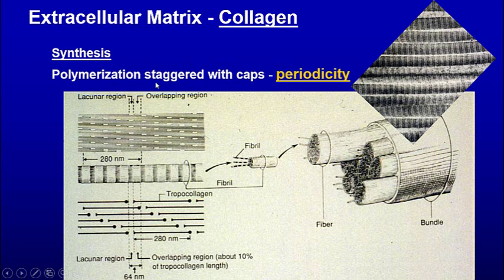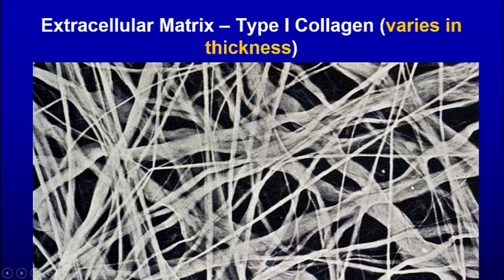Whenever polymerization occurs outside the cell, you get periodicity. As these different units overlap one another, they create a 64-nanometer periodicity that we can see. It's due to the tropocollagen — procollagen already clipped — which when assembled makes the fibril. So this collagen fibril: you make more than one to make a collagen fiber, and then you get a bundle. One characteristic about collagen is that it varies in size — you get some thin ones and some thick ones as well.